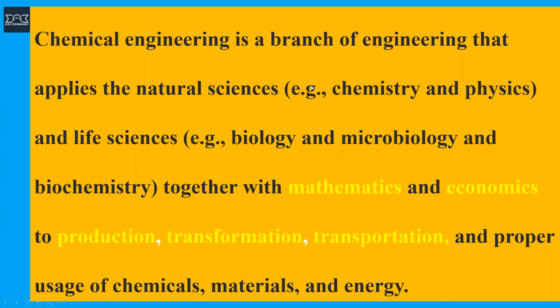My presentation is on these two volumes, which refer to flowsheeting and process safety, which chemical process engineers are involved with in the chemical process industries. Chemical engineering is a branch that involves natural sciences, chemistry, life sciences, biology, mathematics, economics, production, and transformation. It involves proper usage of materials and energy.